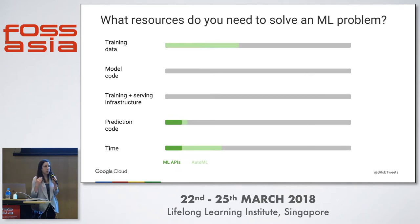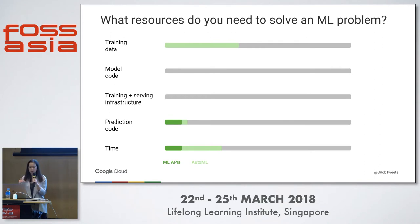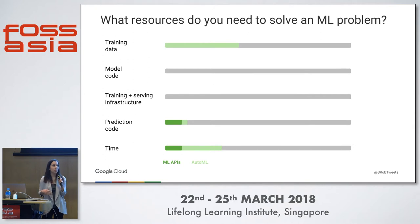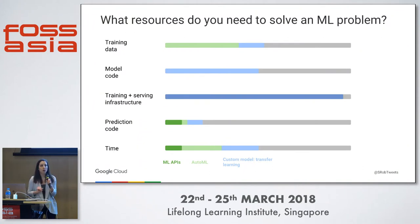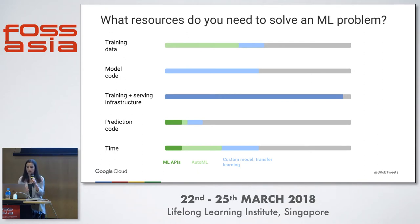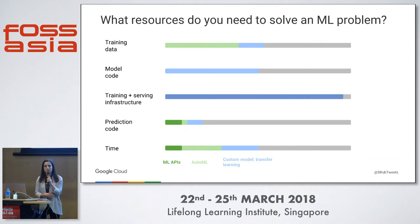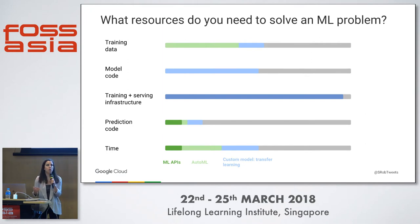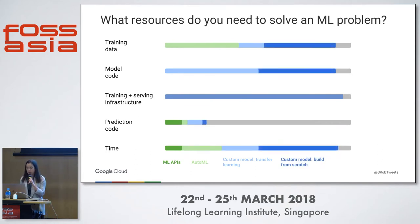For AutoML, this will require you to provide some of your own training data, because you get a custom API endpoint back. The prediction code looks pretty similar to the APIs, but it will require a little bit more time since you'll need to gather your image data set, maybe do some pre-processing, and label that data set. For transfer learning — which involves utilizing a model already trained on a similar classification task and building on top of it — you'll need a bit more training data and will have to write some model code yourself. Training and serving is up to you: on-premise or a managed service like Cloud Machine Learning Engine. And then finally, building a custom model from scratch takes a bit more of each of these resources.